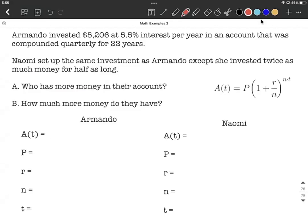We have two people making investments - Armando and Naomi. We want to set up each one individually using the compound interest formula, then figure out who's going to have more in their account and how much more they have.